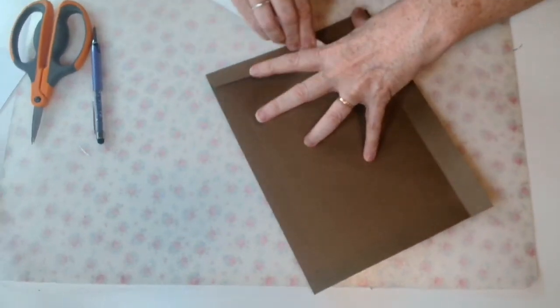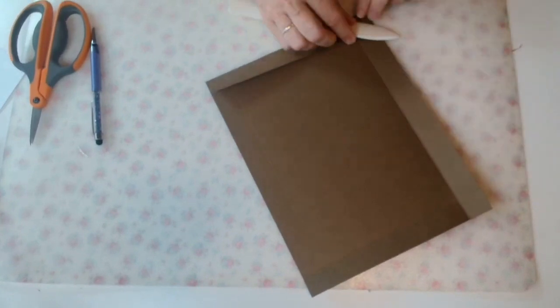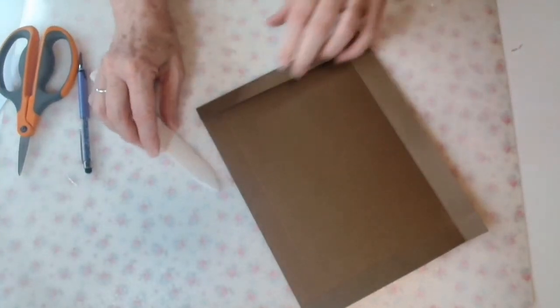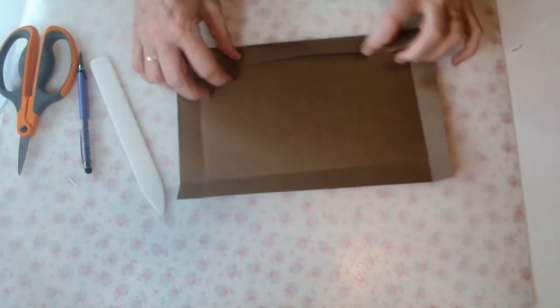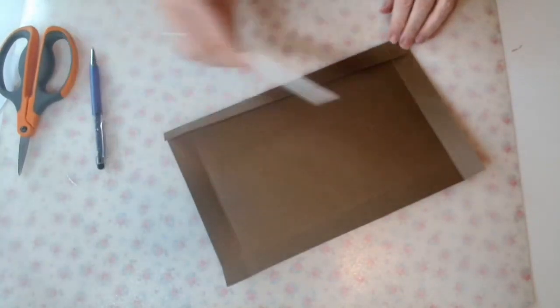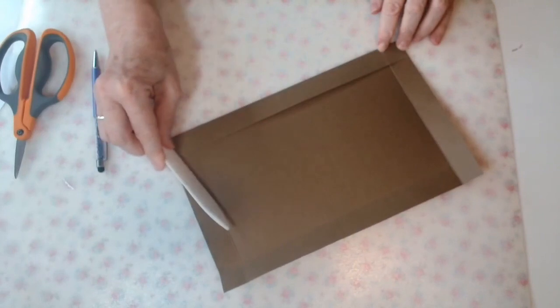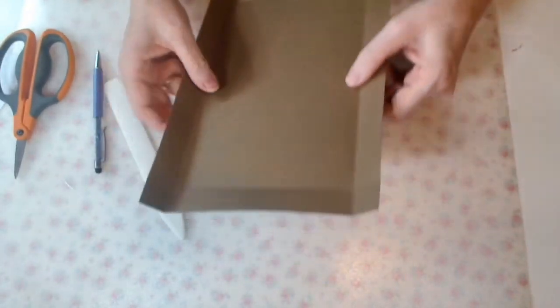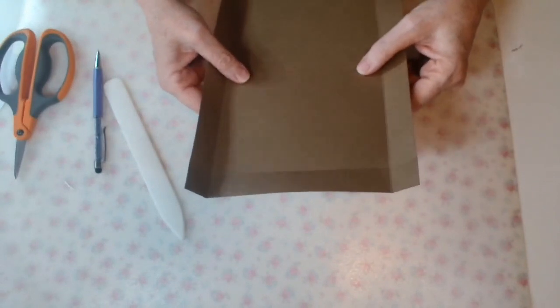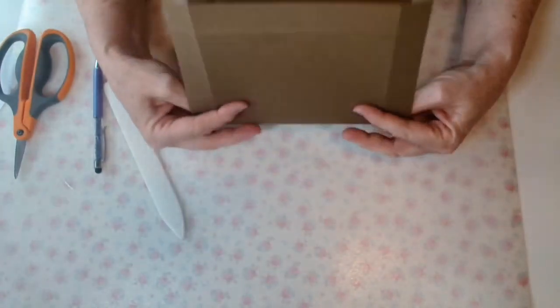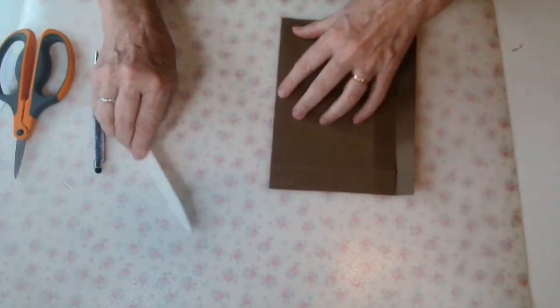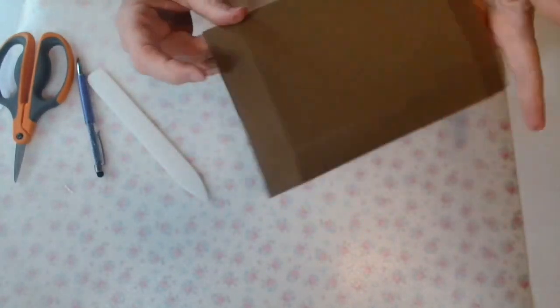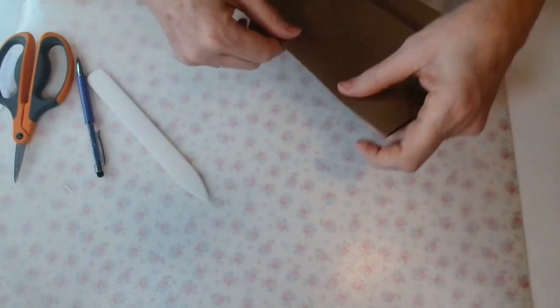If you use the flat of your bone folder, you get a better crease. I don't know why, but you get a better crease. That's the outside ones done. Now we are going to fold the two center score lines again. Give them a good burnish.